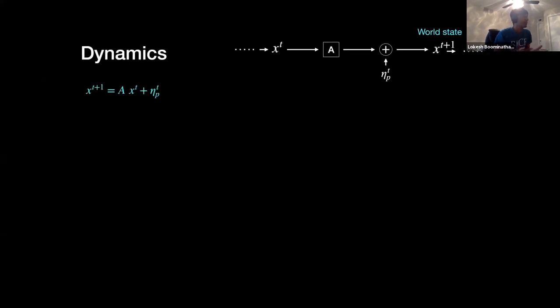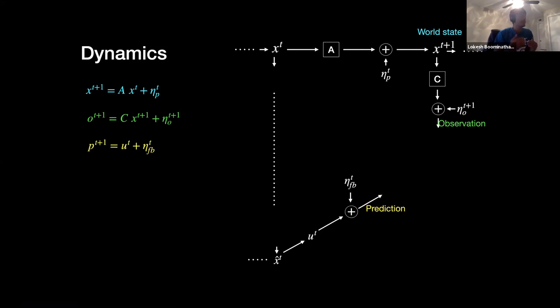So let's say we have a world state XT that evolves over time given some sort of linear dynamics where A is a known matrix. And the observation that we see is basically a corrupt version of this world state which is corrupted by the observation noise and is first multiplied by the C matrix. And based on what we understand of the world we make predictions of what is going to happen, and this prediction is based on our estimate of the world at the previous time point and this prediction is also carried by this feedback noise which is not accounted in the predictive coding theory.